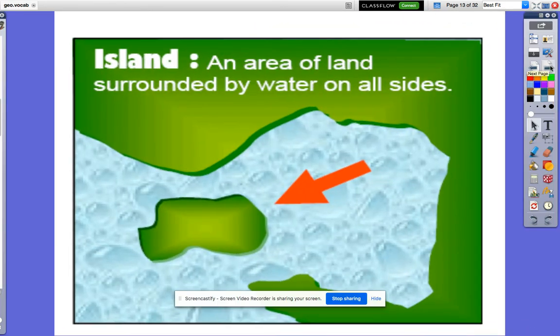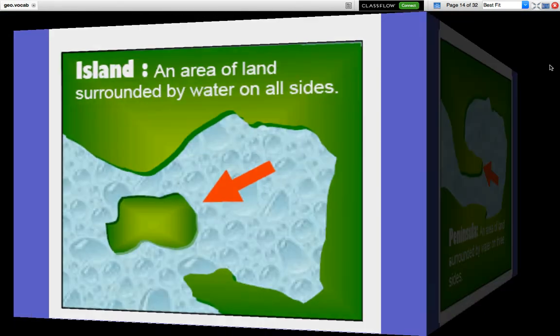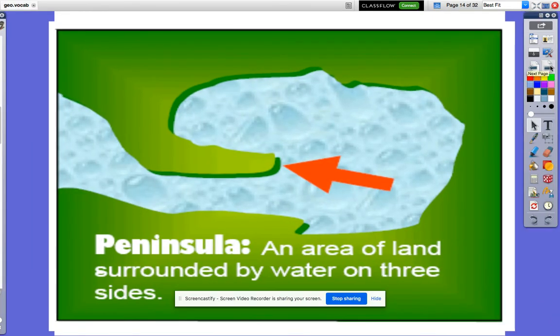An island. An island is an area of land surrounded by water on all sides. You can think of Florida on the map when you're thinking of a peninsula.